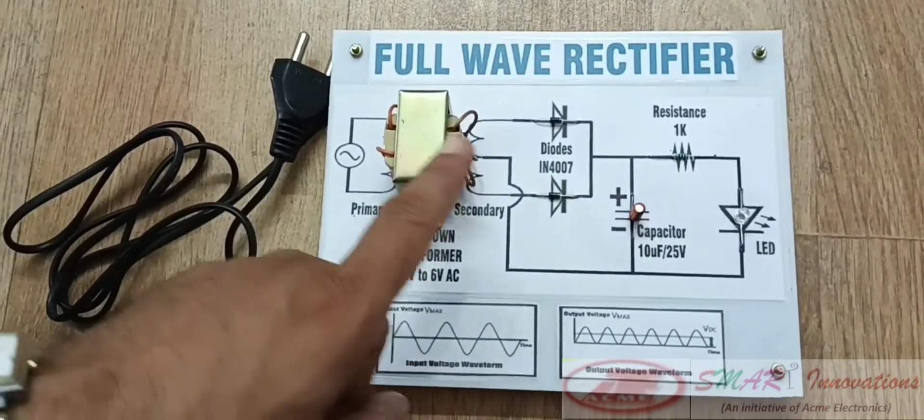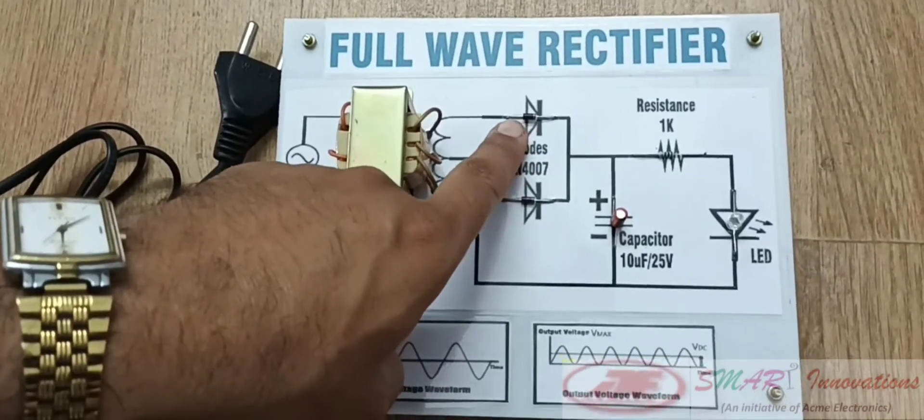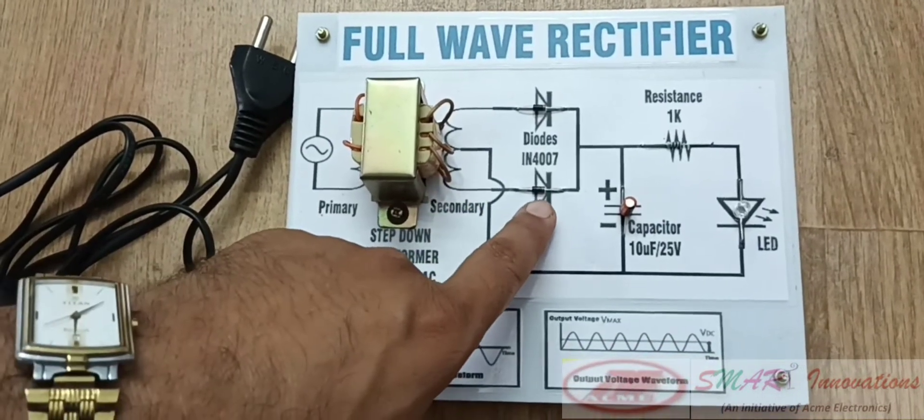The positive half of the AC is rectified by the upper diode, and the negative half is rectified by the lower diode.